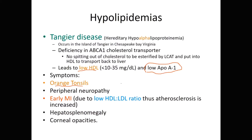You'll see red erythematous tonsils with exudate in other diseases, but orange tonsils are unique to Tangier's disease. Other findings include peripheral neuropathy, and because we have low HDL with normal LDL, there's an increased risk of cardiovascular disease and myocardial infarctions. The HDL to LDL ratio is low, promoting atherosclerosis. Hepatosplenomegaly is also associated, and sometimes you can see corneal opacities.